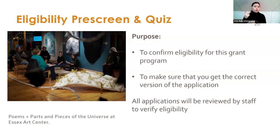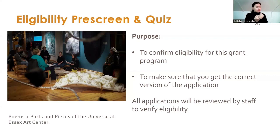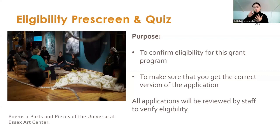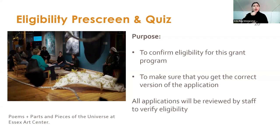Simply because we ask eligibility questions up front does not mean we won't confirm eligibility again. Once submitted, all applications will be reviewed by staff — we'll confirm you are an active incorporated organization that has not been revoked, and that your tax-exempt status has not been revoked or suspended.